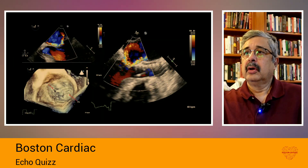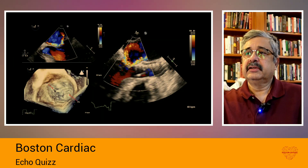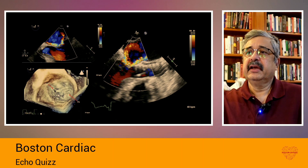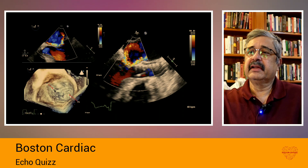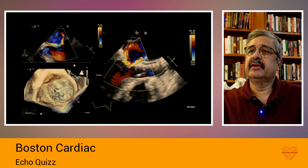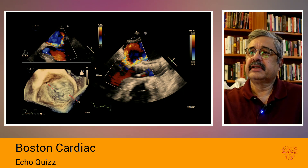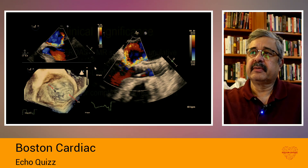In another situation, there is an A1 flail producing a jet in one direction, and a P3 flail producing a jet in the opposite direction, again leading to two jets headed in opposite directions — another classic example of the crossed sword sign with bileaflet involvement.